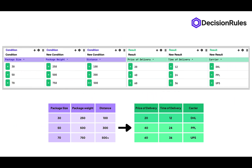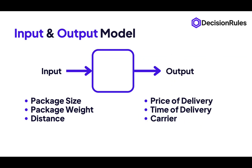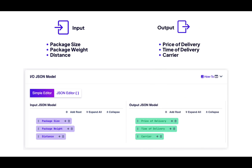Here we can see how our Decision Table looks directly in Decision Rules — it's almost the same. Now let's talk about the input and output model used for a Decision Table — essentially, the structure of the data that I will be sending in and receiving back. In our case, the input is: package size, package weight and the distance. And the output will be: price of delivery, time of delivery and a carrier. Here is how the input and output structure looks like in Decision Rules — again, it's almost the same as my bullet points in the presentation.